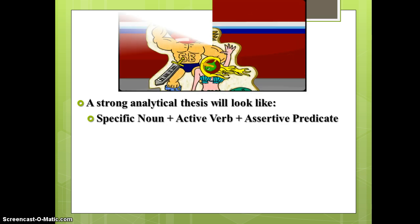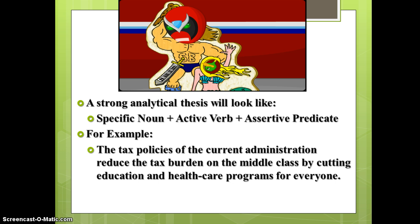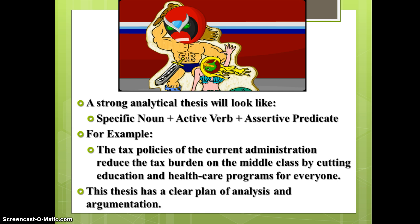A strong analytical thesis has a specific noun, an active verb, and an assertive predicate. Here's an example pulled from a student essay: 'The tax policies of the current administration reduce the tax burden on the middle class by cutting education and health care programs for everyone.' The student already established in the introduction which administration they were discussing. There's a clear goal — they're analyzing how the reduction of the tax burden on the middle class will occur by cutting education and health care programs. There are clear, specific ideas here to analyze.